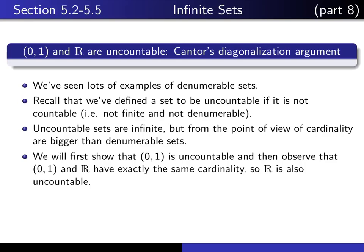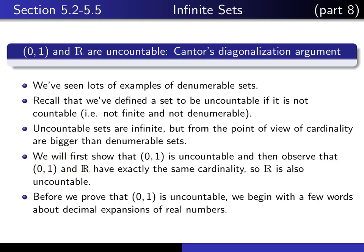So we're going to prove that (0,1) is uncountable, and after we do that, we're going to show by means of a picture that (0,1) and R have exactly the same cardinalities, and so that will prove that R is also an uncountable set. In order to do the proof, I'm going to make use of some facts about decimal expansions of real numbers. So let me make a few comments about decimal expansions before we do the proof.